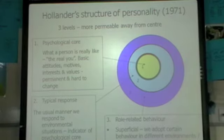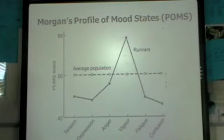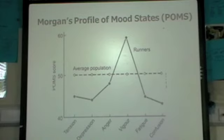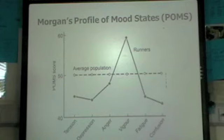The Profile of Mood States is a way of measuring personality, looking at six traits: tension, depression, anger, vigor, fatigue, and confusion. Five of those are negative — the only positive one is vigor. Morgan's research compared elite and non-elite performers and found that elite performers display an iceberg profile: they score lower than the average population on the five negative characteristics and considerably higher on the one positive characteristic, vigor.